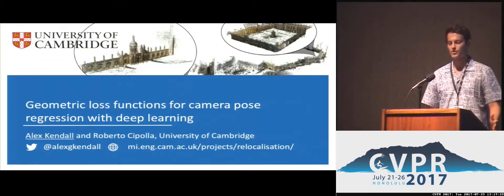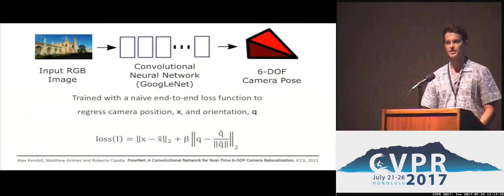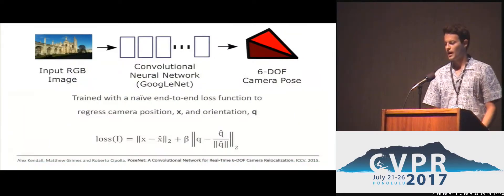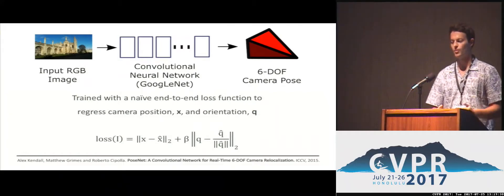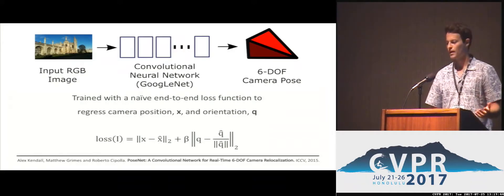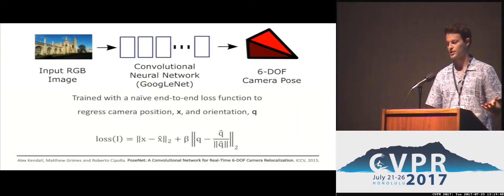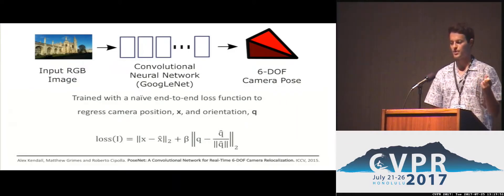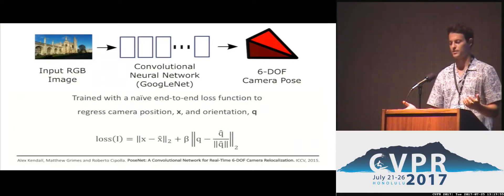The problem we're addressing is trying to estimate a camera's position and orientation in 3D space from a single image. This follows on from work we presented at ICCV 2015 called PoseNet, which trained a deep learning model to predict a camera's position and orientation from a single image. That model was trained with a naive loss function — a regression function trying to predict both position x and orientation as a quaternion, with a weighting factor between them.